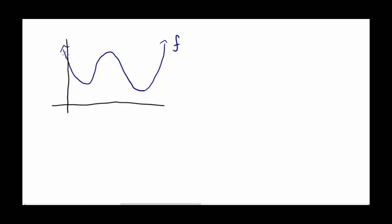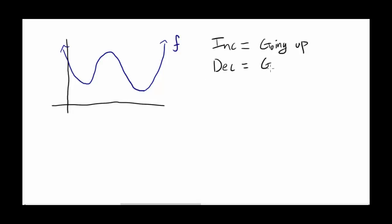Let's say we have a function f whose graph looks something like this. It goes down, it goes up, it goes back down, then it goes up. Now we know the word increasing means going up as x increases, and the word decreasing means going down as x is increasing.